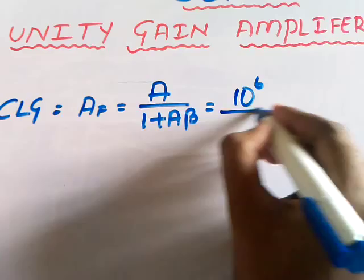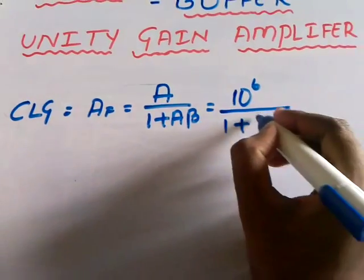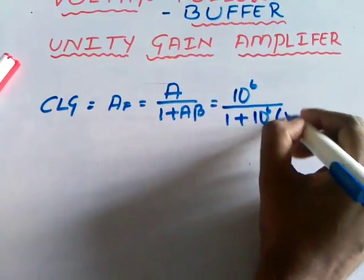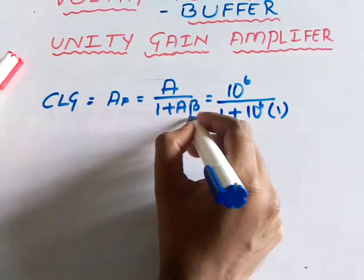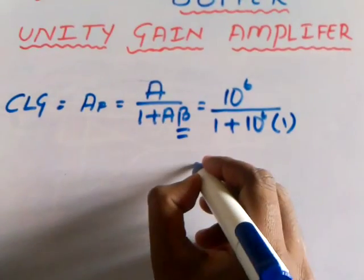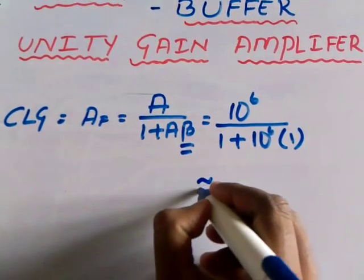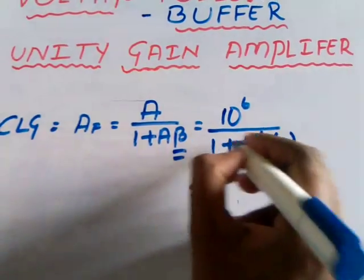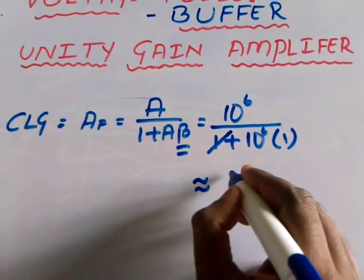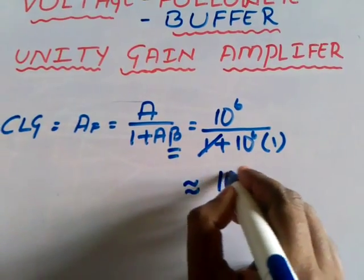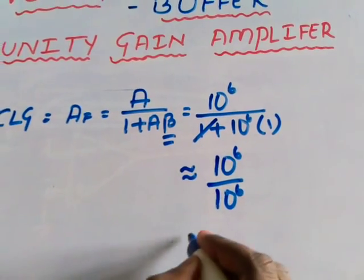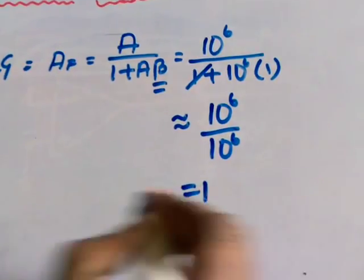So the expression becomes: A divided by 1 plus A·beta = 10⁶ divided by 1 plus 10⁶ into 1. As I said earlier, the feedback factor is 1. Now, if you neglect this 1 in the denominator by comparison, we will get almost all 10⁶ by 10⁶, that is, equal to 1.